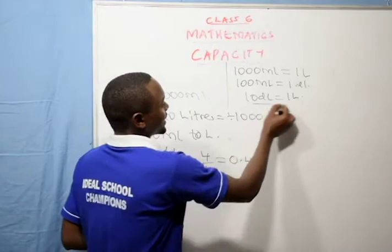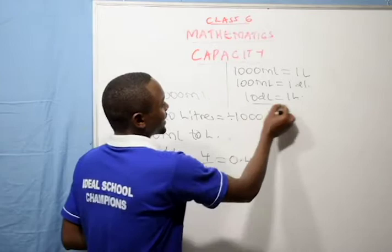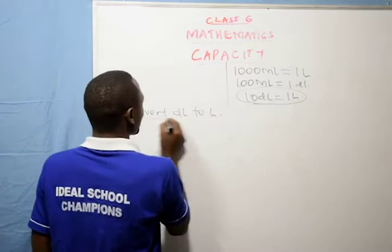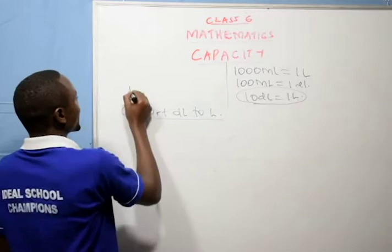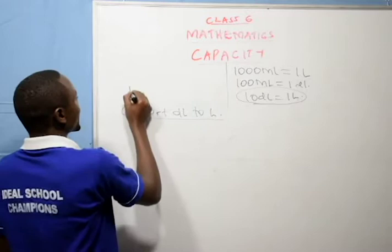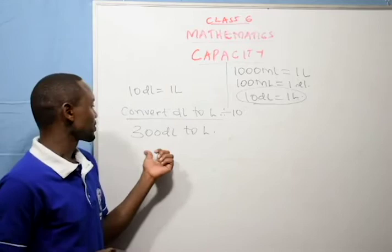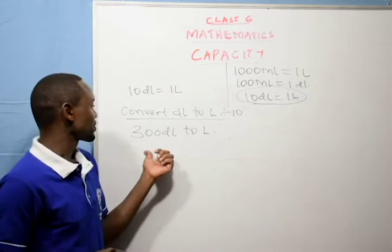Let us now convert deciliters to liters. When converting deciliters to liters, because 10 deciliters is equivalent to 1 liter, we divide by 10. For example, convert 300 deciliters to liters: 300 divided by 10, which is 30 liters.